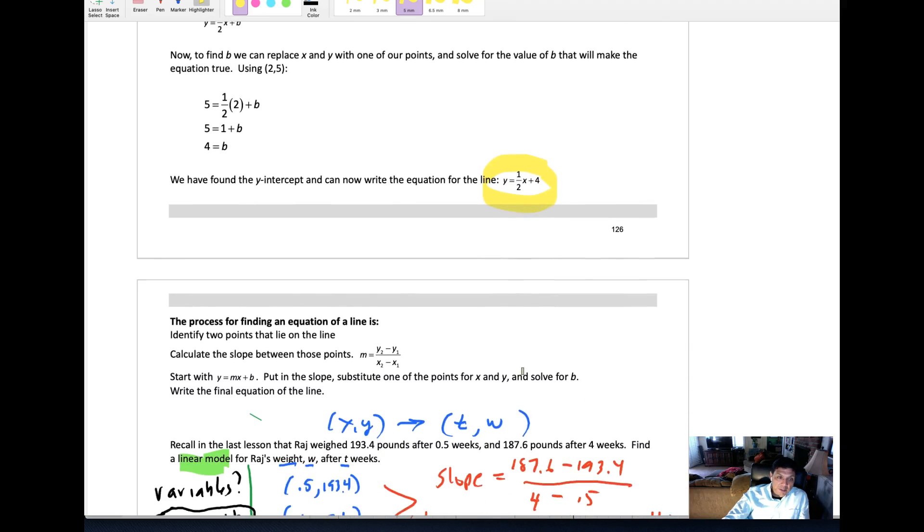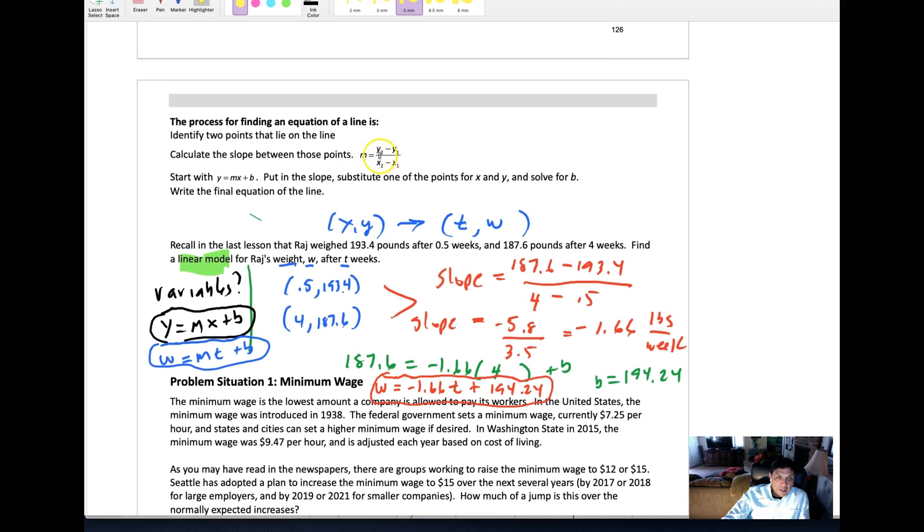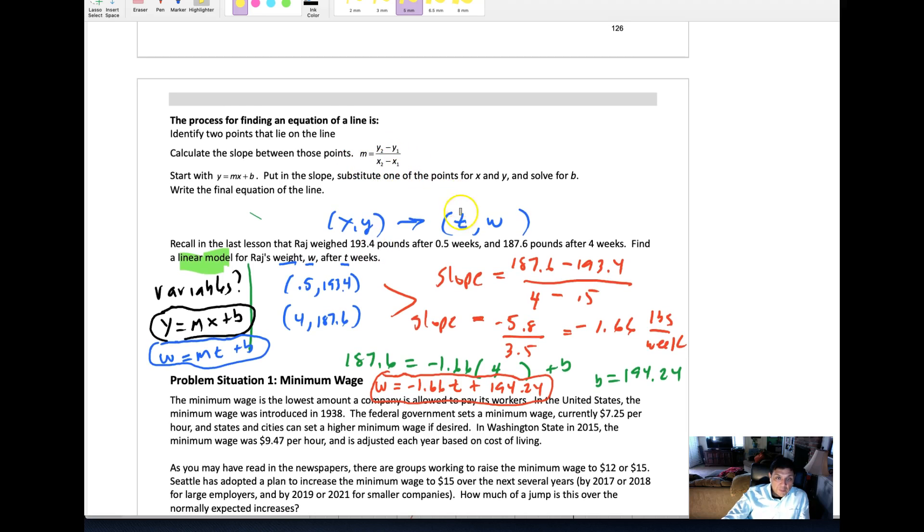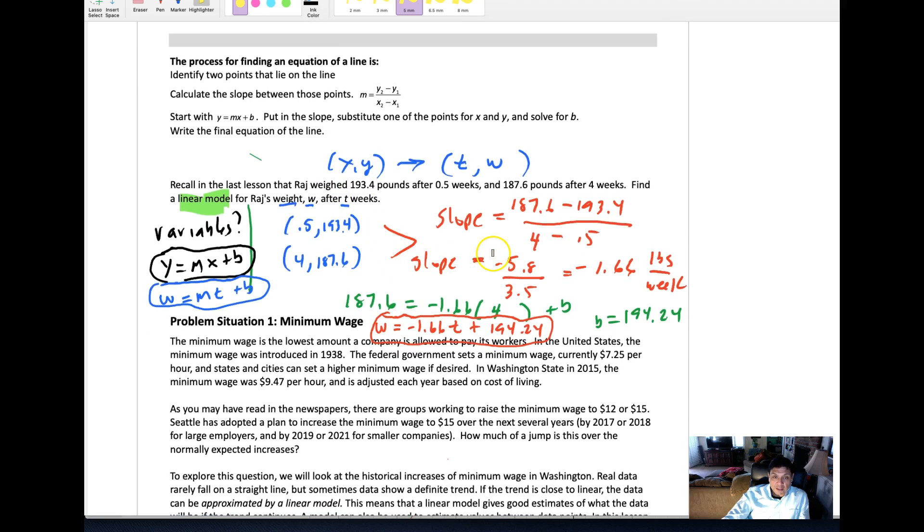There's a process to find the equation of a line. Once you have this equation, once we put it to a context though, that is where finding the slope is a little bit more meaningful.